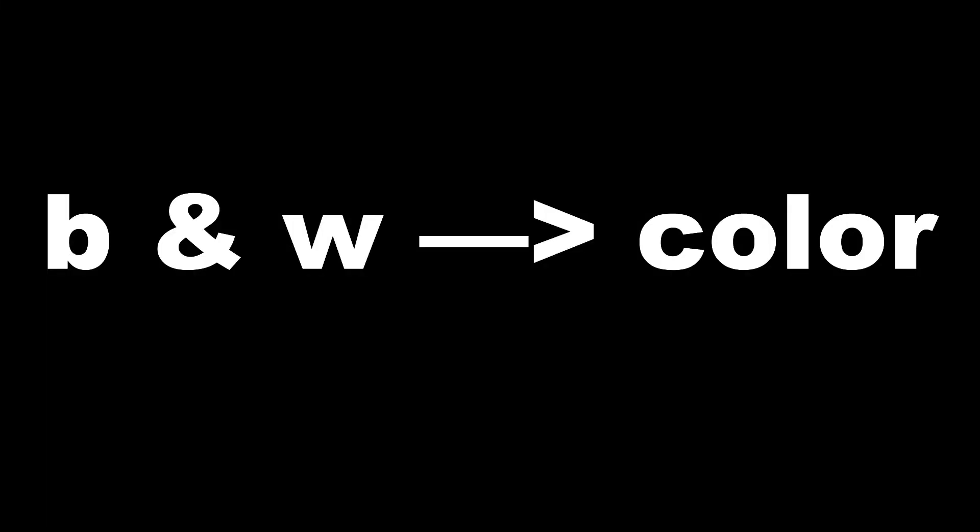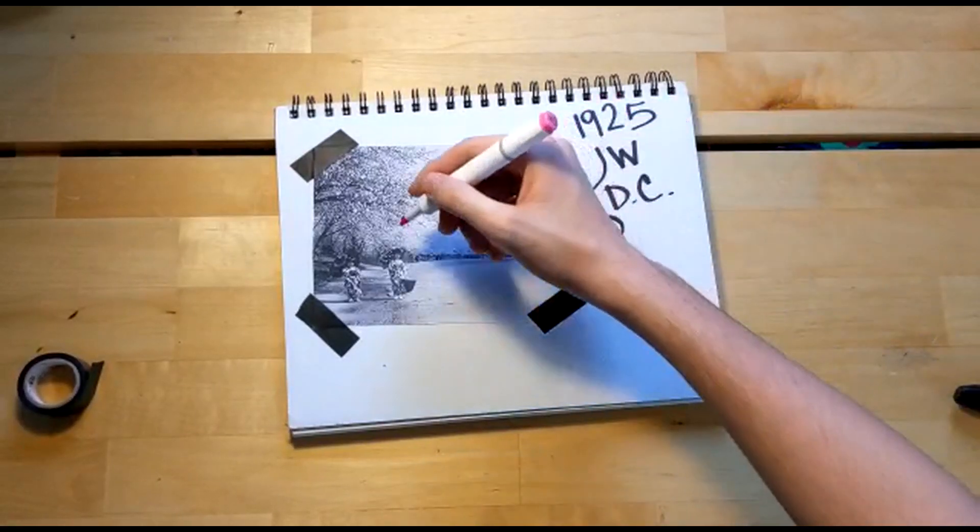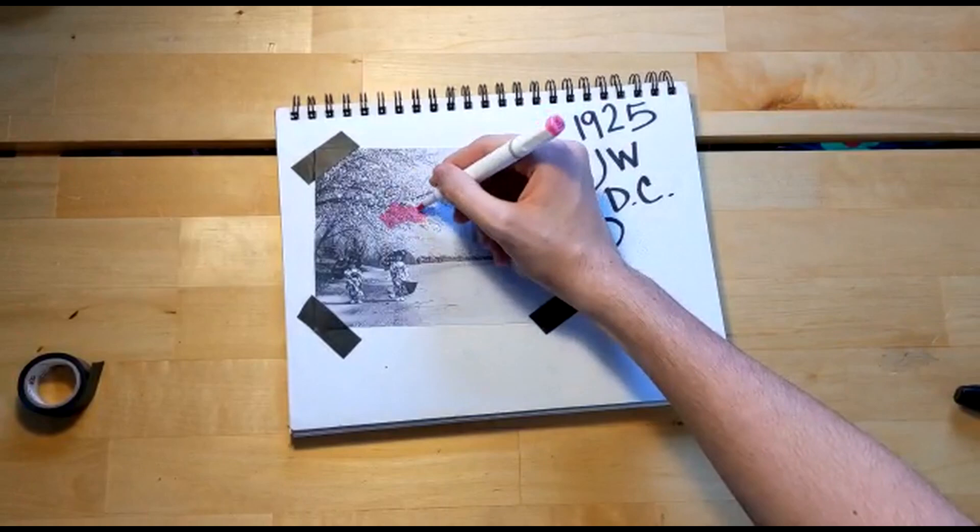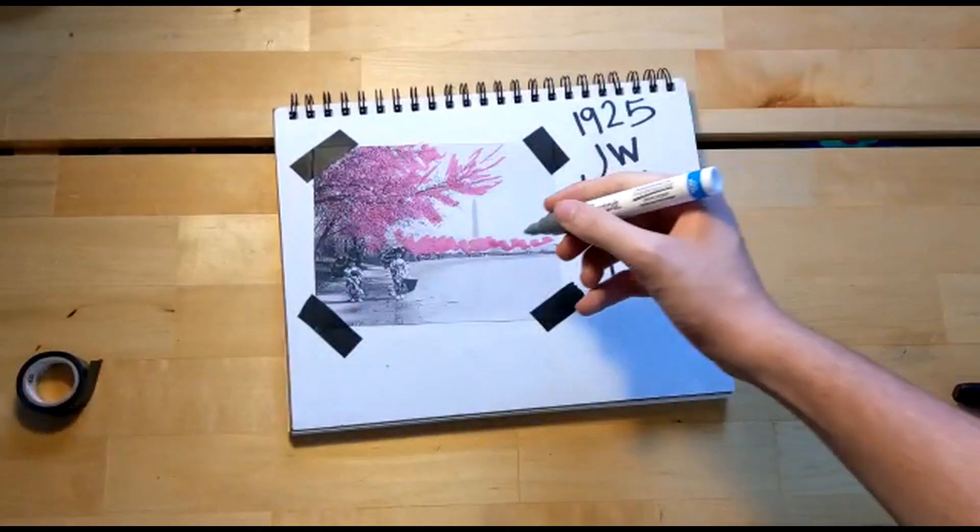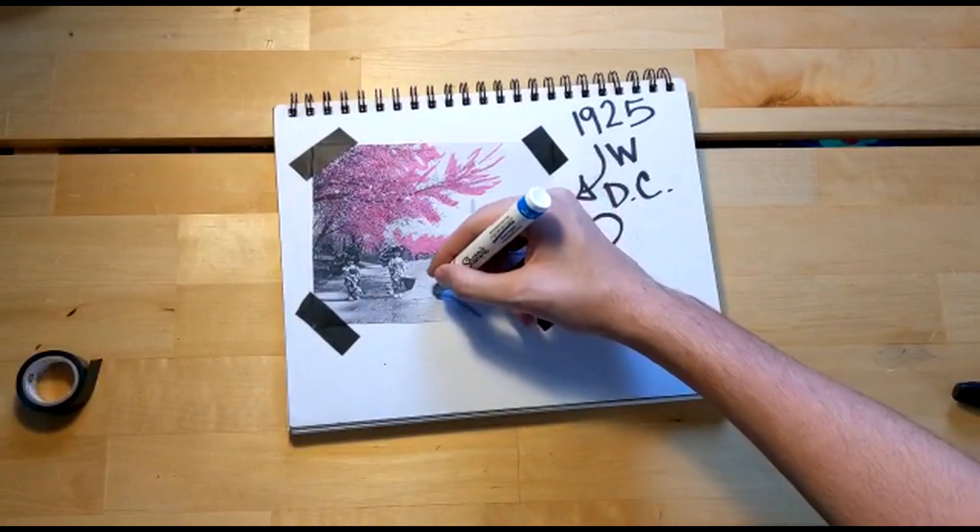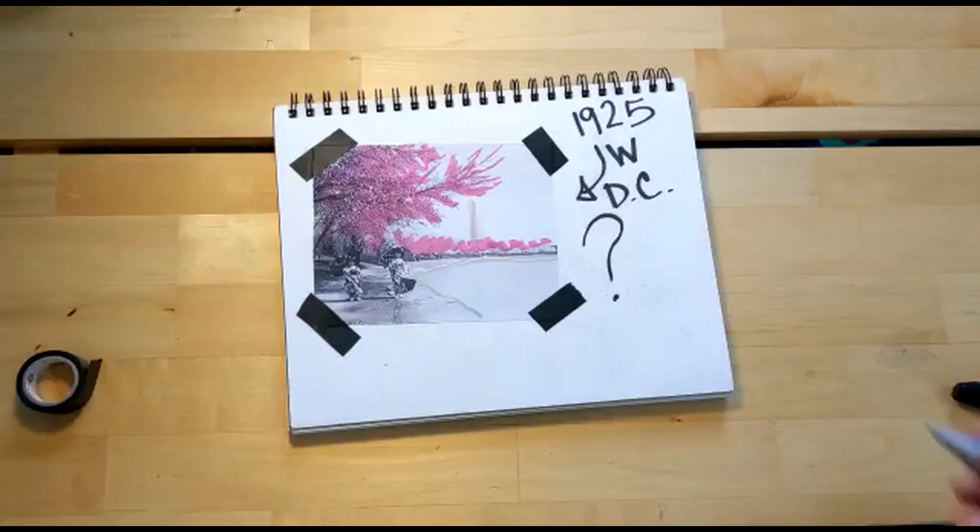Let's try to change this image from black and white to color. So let's try to color it in. Let's add some pink, yeah that's a nice silver. I don't know how I feel about this. Maybe let's add some green for the grass.